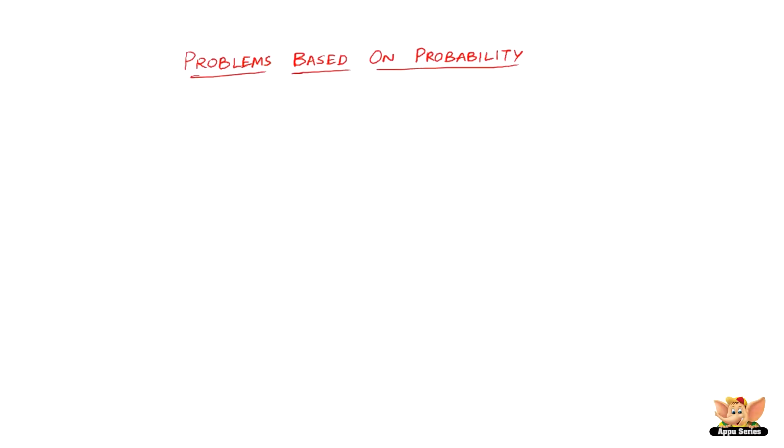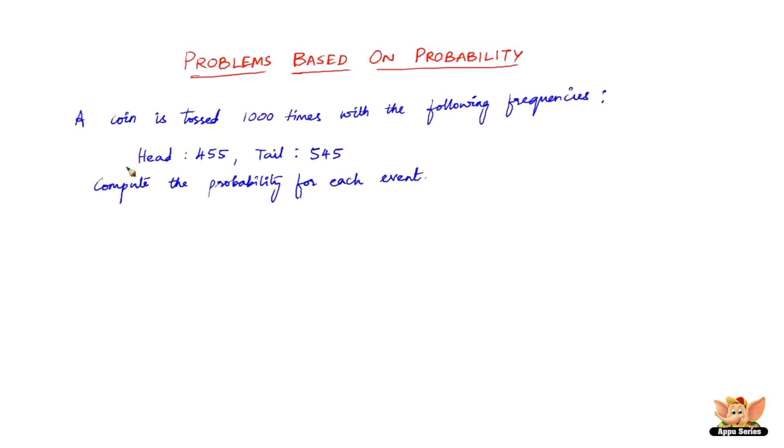In this video, let us solve some problems based on probability. Here we have a question: a coin is tossed 1000 times with the following frequencies — head is 455 and tail is 545. Compute the probability for each event.